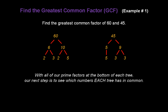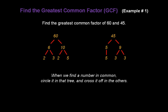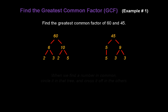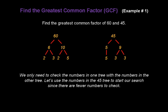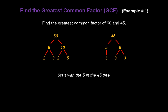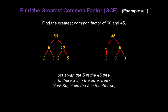With all of our prime factors at the bottom of each tree, our next step is to see which numbers each tree has in common. When we find a number in common, remember we're going to circle it in that tree and cross it off in the others. Let's use the numbers in the 45 tree this time to start our search because there are fewer numbers to check. Start with the 5 in the 45 tree. Is there a 5 in the other tree? Sure enough, there is. So circle the 5 in the 45 tree, and cross out the 5 in the 60 tree.